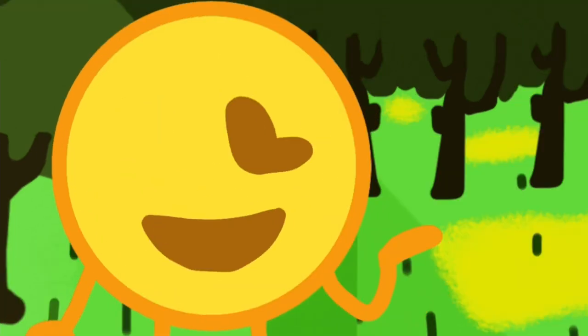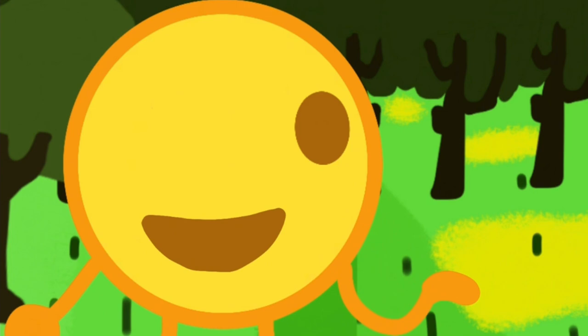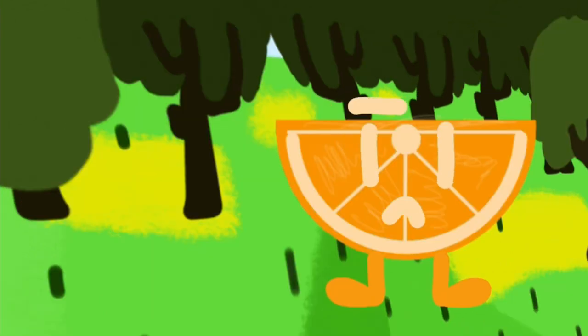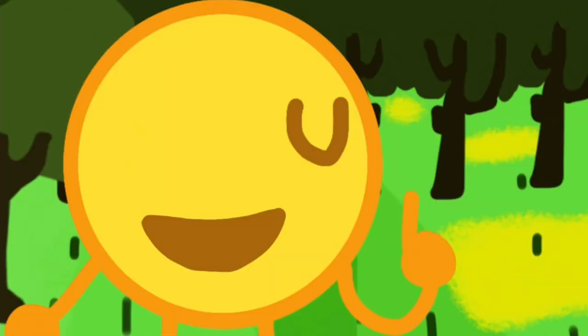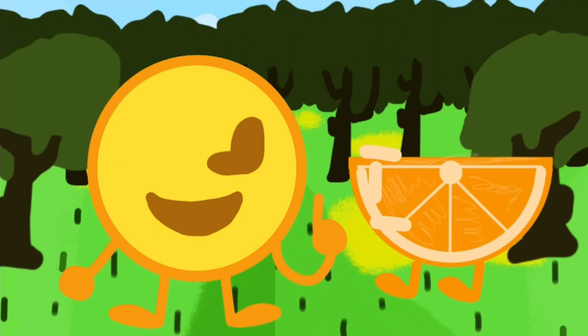An emoji is a pictogram, logogram, ideogram, or smiley embedded in text and used in electronic messages and webpages. The primary function of modern emoji is to fill in emotional cues otherwise missing from typed conversation as well as to replace words as part of a logographic system.